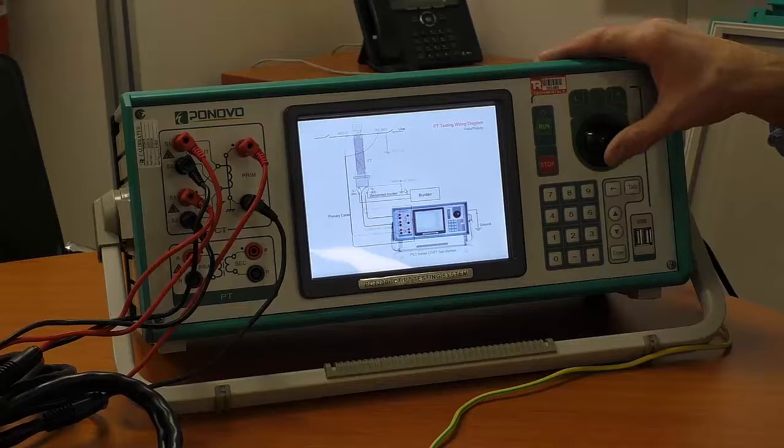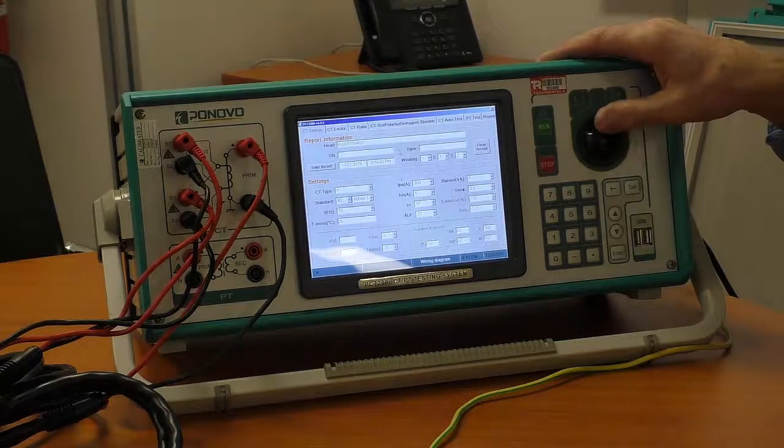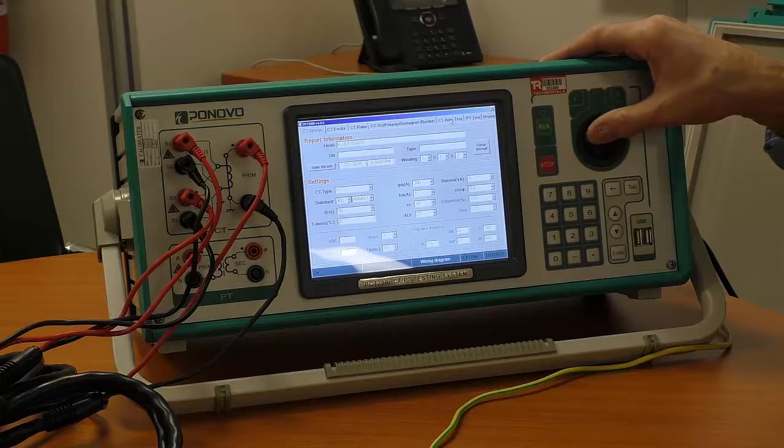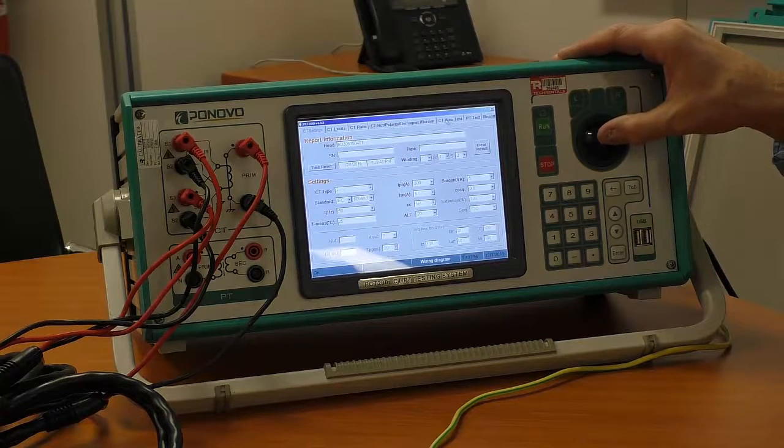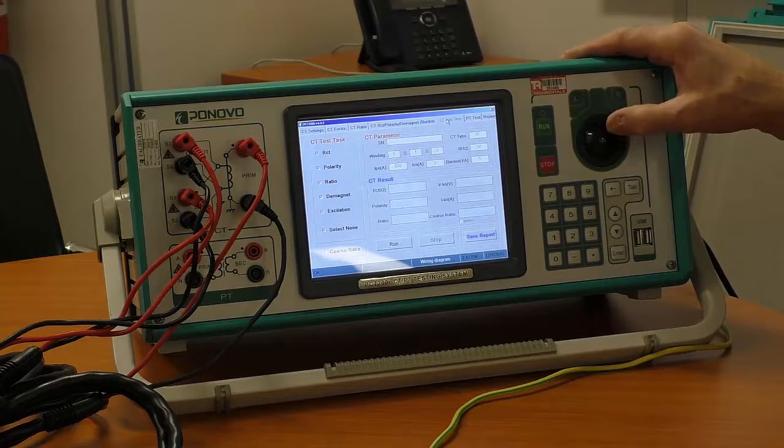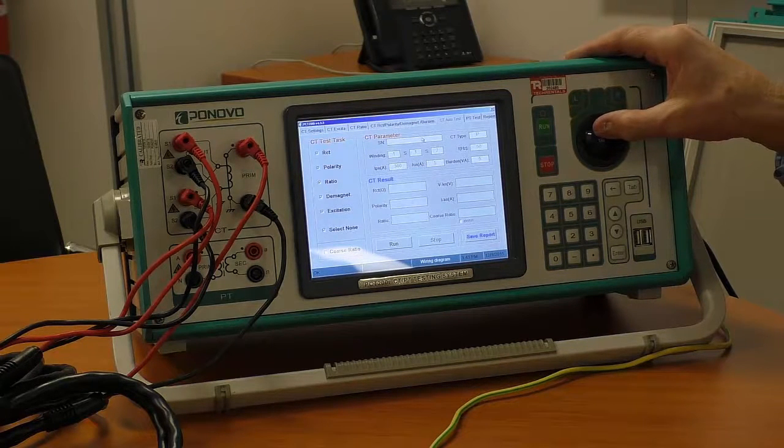Okay, so now I've got it wired according to one of these diagrams. I bring up, here's what we want to do. We want to do a CT auto test, so I'm going to select this, so I move the mouse to it, click the left button. Now I can enter a serial number if I wish, etc.